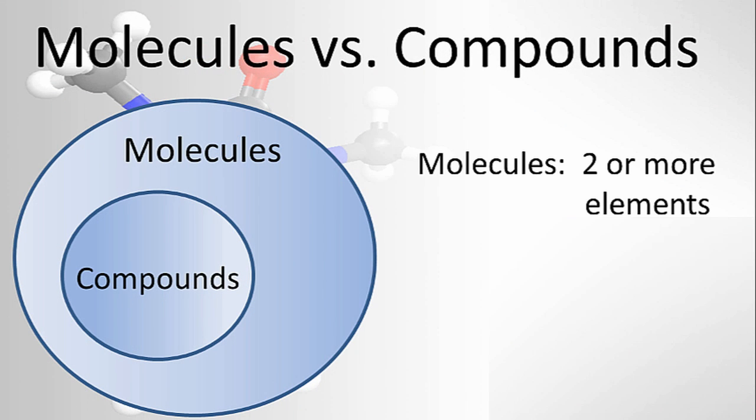We have molecules, which are two or more elements. Things like O2, we have two oxygens chemically bonded, or H2O, where we have two hydrogens and an oxygen chemically bonded, or CaCl2. Those are molecules because there's two or more elements.